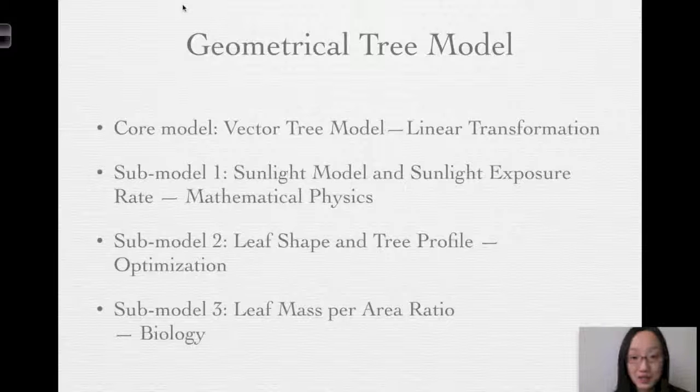For example, we have a sunlight model and sunlight exposure rate based on mathematical physics, and it models the amount and intensity of light that the leaves of a tree are exposed to. We also have the optimization model that finds the best combination of leaf shape and tree profile. And in order to calculate the total leaf mass of a tree, we use an index in biology called the leaf mass per area ratio.